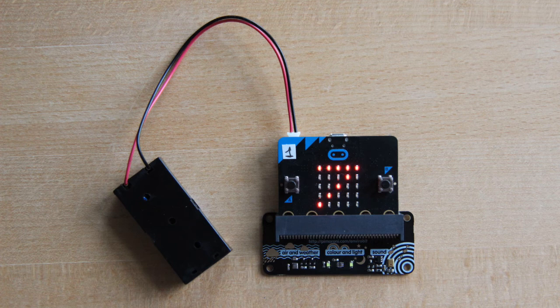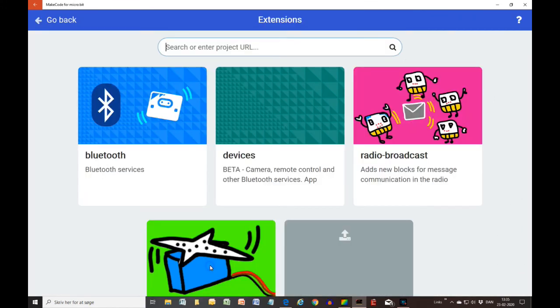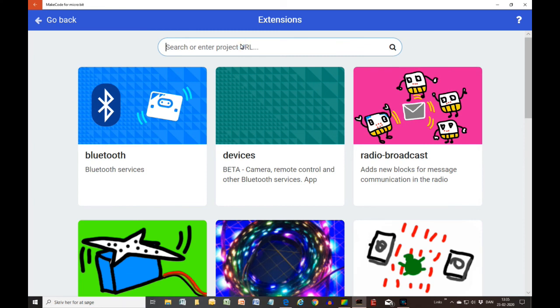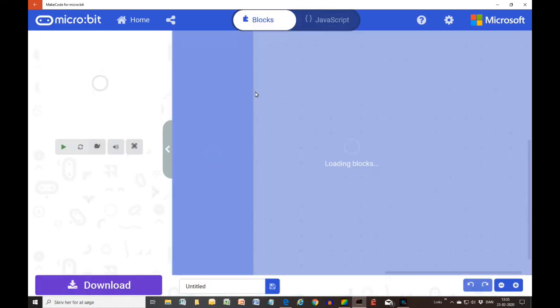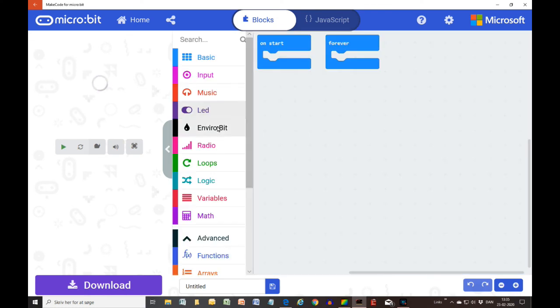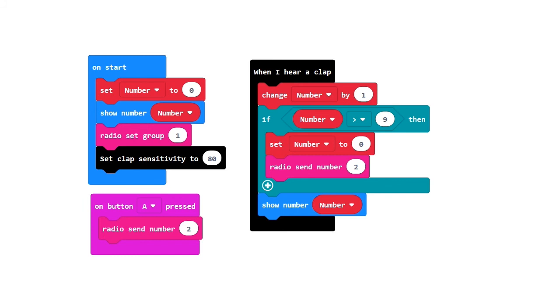The microbit looks like this. In order to program it, you'll need to download an extension as shown here. Now you can choose from the blocks here. The program looks like this. All programs in the video can be downloaded by help of the links in the comments below. Thank you.